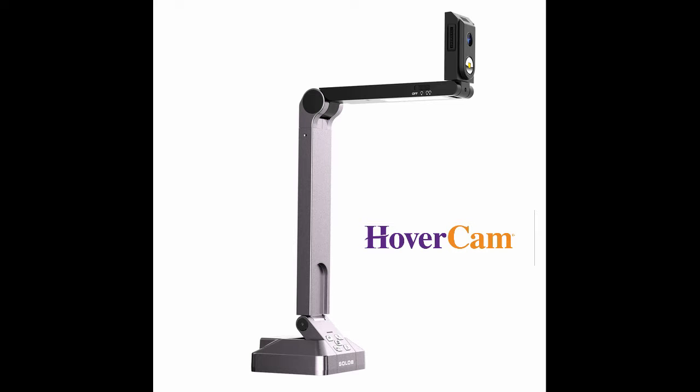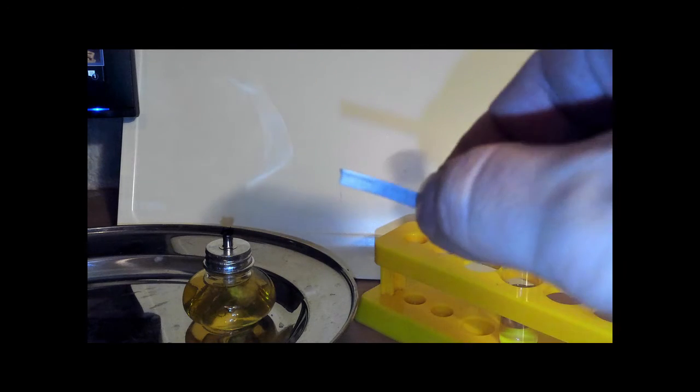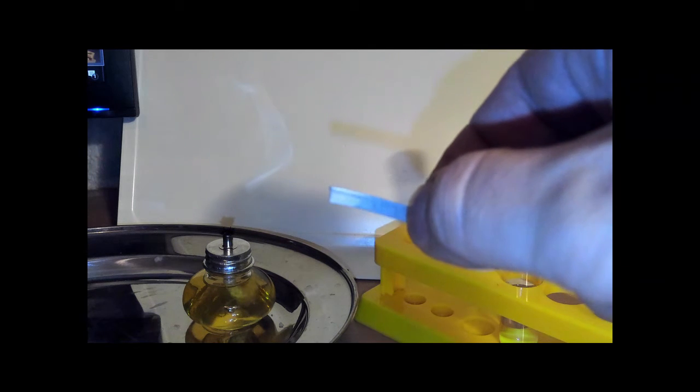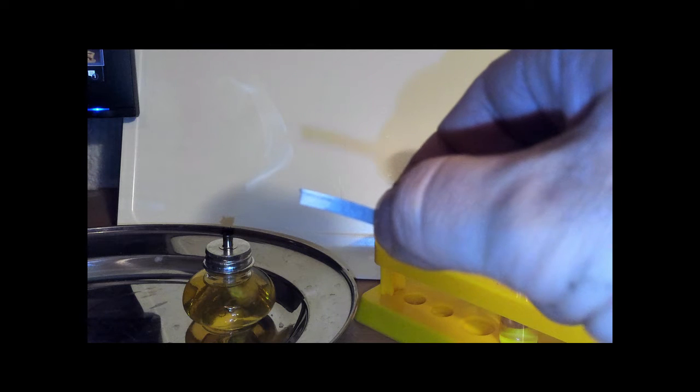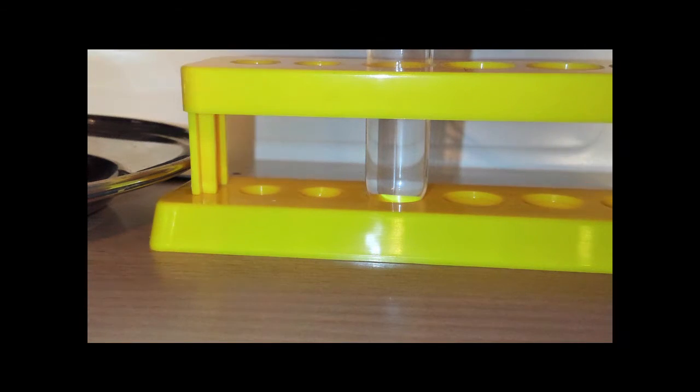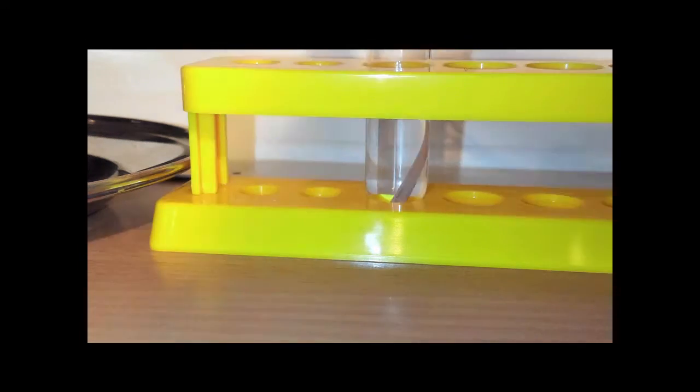Here is my strip of magnesium that I have cut off ready to add to the vinegar in the test tube. Here we are now adding the magnesium strip to the test tube, and you'll see bubbles being given off straight away.